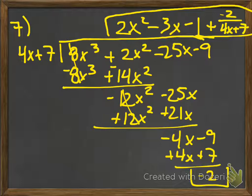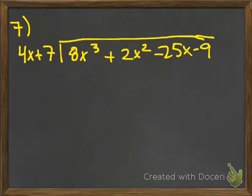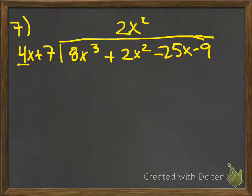Number 7 — I'm going to walk you through this one. We've got 8x cubed plus 2x squared minus 25x minus 9 divided by 4x plus 7. Take the lead term: what's 8 divided by 4? 2. Then x cubed divided by x — subtract exponents, 3 minus 1 is 2 — so this would be x squared. Take that number and multiply it: 2x squared times 4x gives me 8x cubed. Those two should always match because they're going to cancel out.